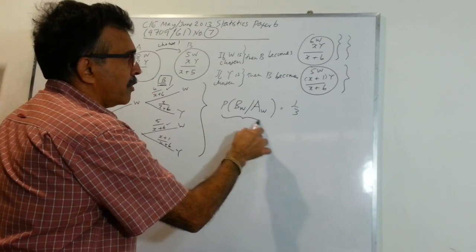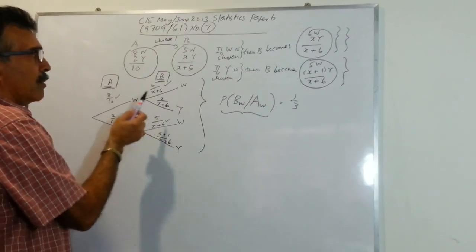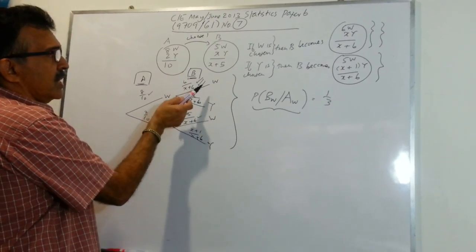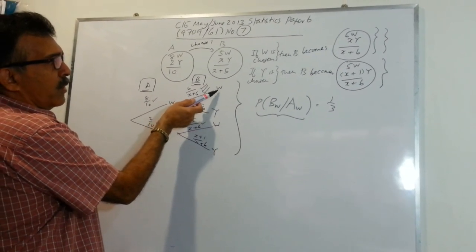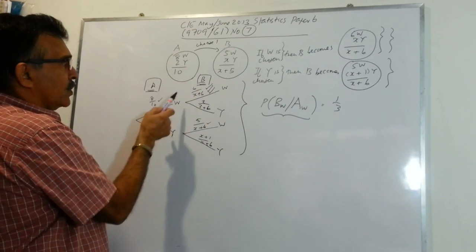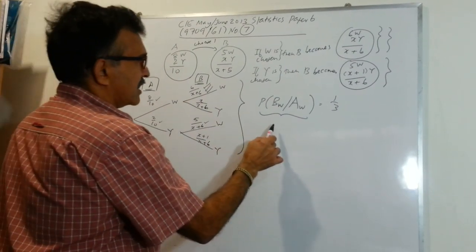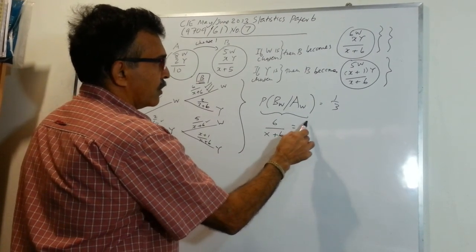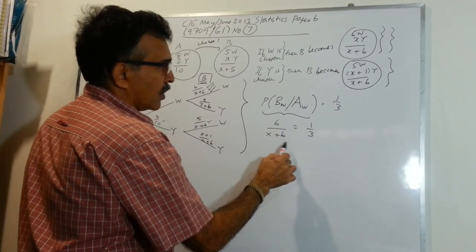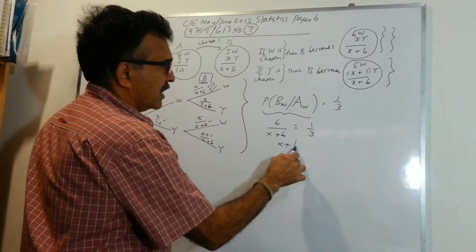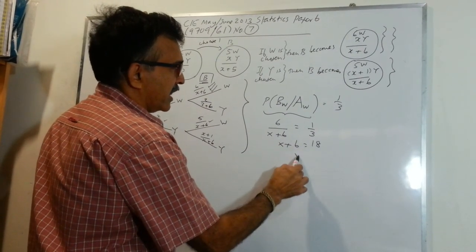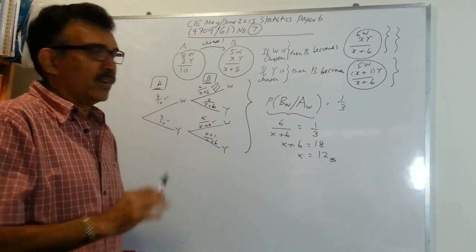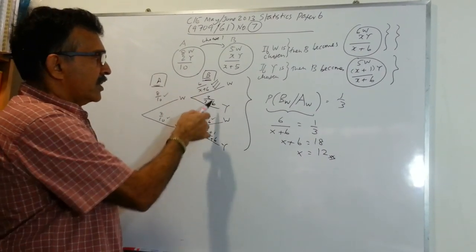This probability is just the probability we have written in the tree diagram. These are conditionals — the probability of getting a white from B given that you chose a white from A. So we can write this as six over X plus six equals one over three. Cross-multiplying, we get X plus six equals 18, and therefore X equals 12. Not difficult at all — just remember these are conditional probabilities.